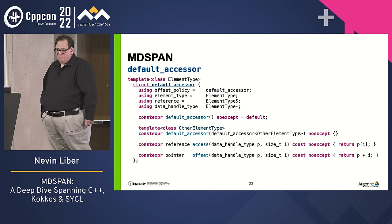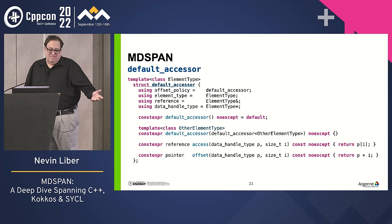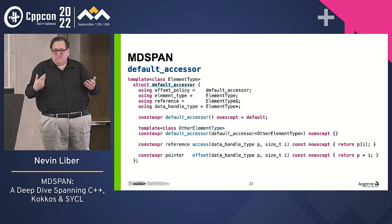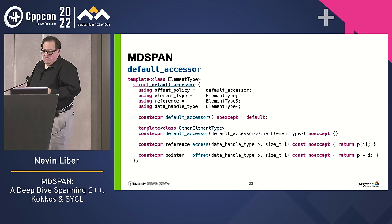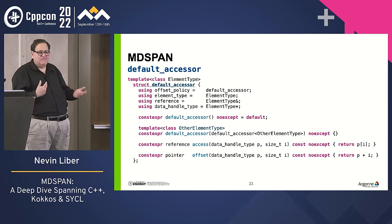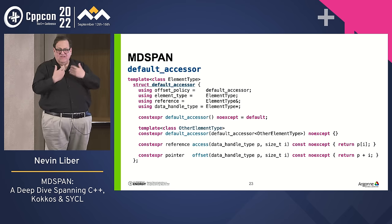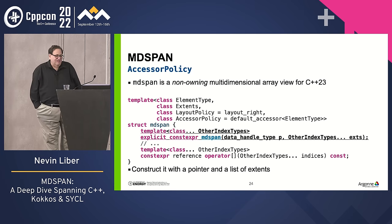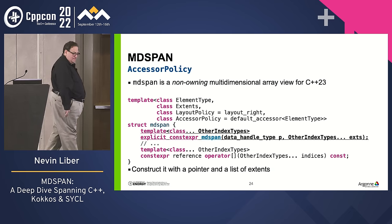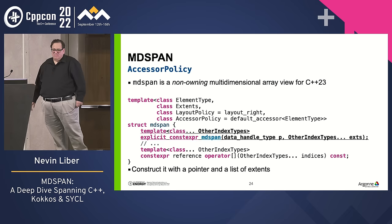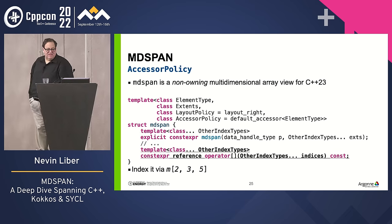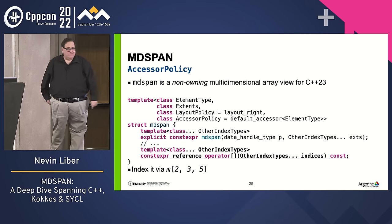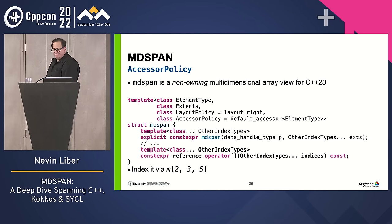The default accessor constructs from other accessors and has an access member — roughly what square brackets do — and an offset, which is a people's-i calculation. Those may differ if you have a fancy pointer type or data handle, which is why we allow it as a customization point. Constructing mdspan requires a pointer or data_handle_type and the extents. There are a few other constructors, and to get to a point you use the square bracket operator with comma, a new C++23 language feature.